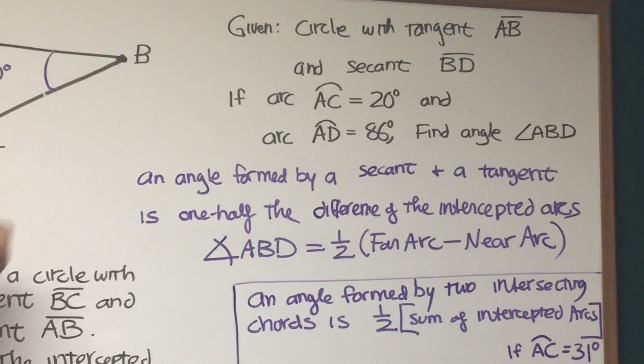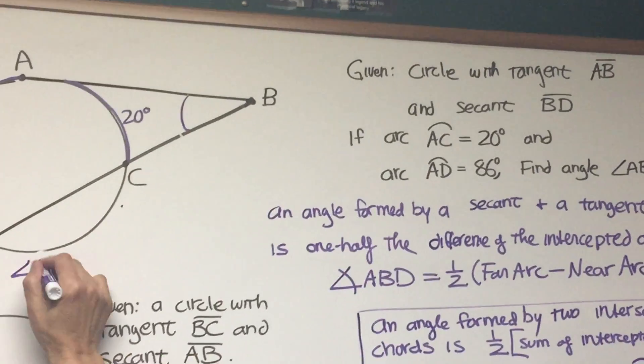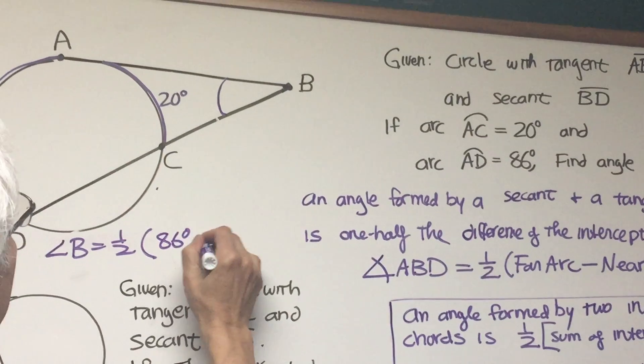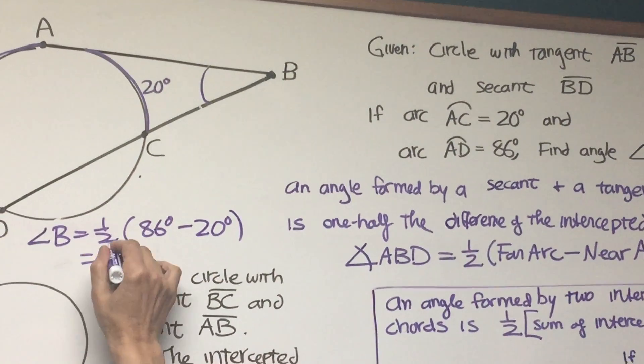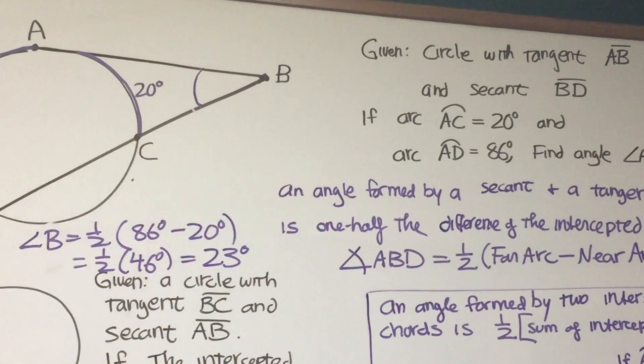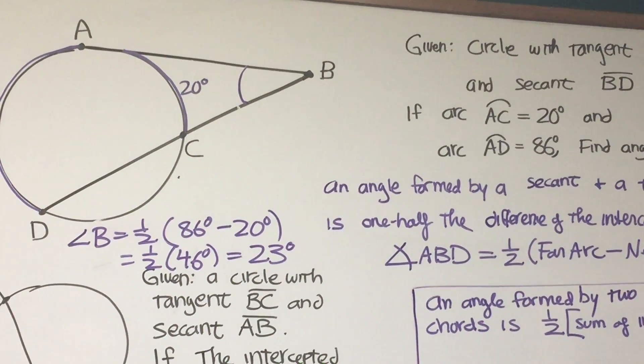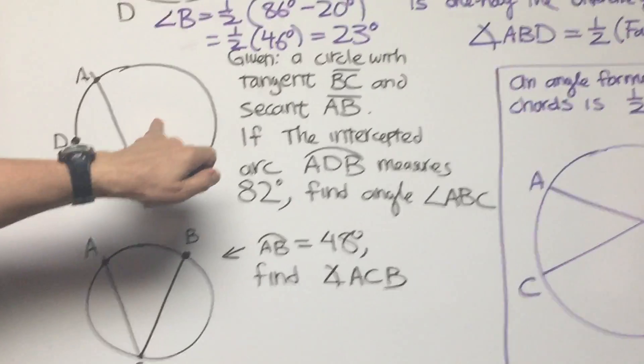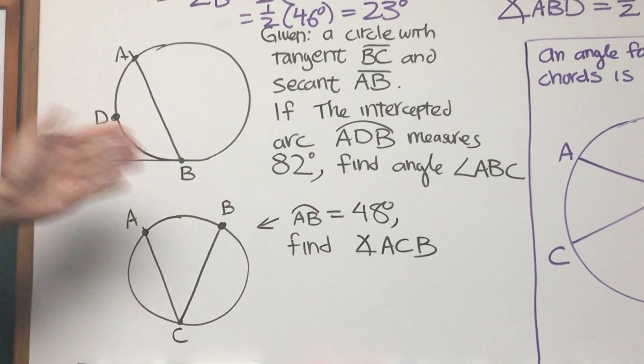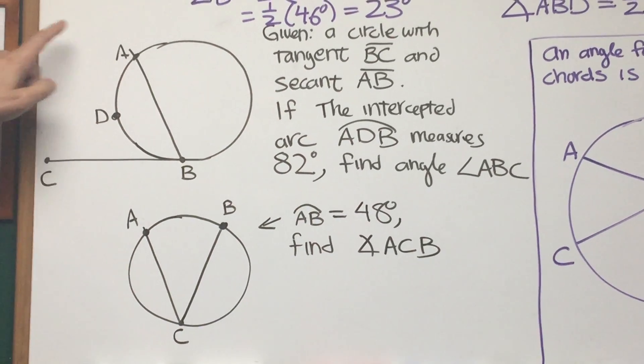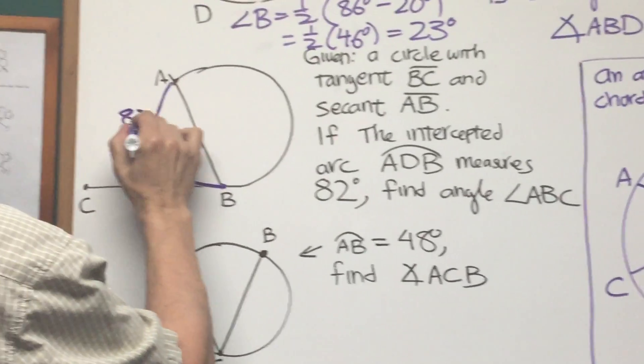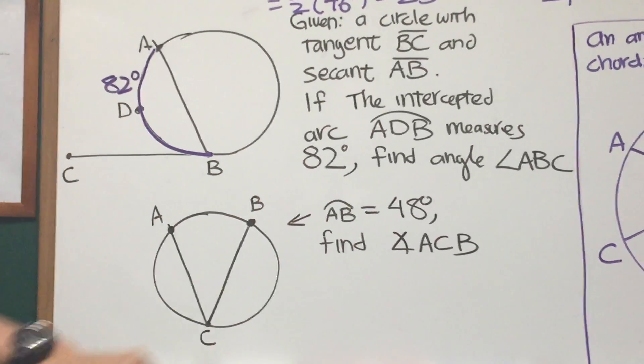It's going to be one half the difference of the intercepted arcs which is going to be angle B is going to be equal one half the distance of the far arc which is 86 degrees minus the near arc which is 20 degrees. So it's one half 46 degrees and therefore it's 23 degrees and that's the measure of angle B. Okay, and so here's a problem but very much similar. It's given a circle with tangent BC and secant AB and here it's a slightly different arrangement but it's exactly the same principle. If the intercepted arc ADB measures 82 degrees, okay here's my intercepted arc, 82 degrees, find the measure of angle ABC.